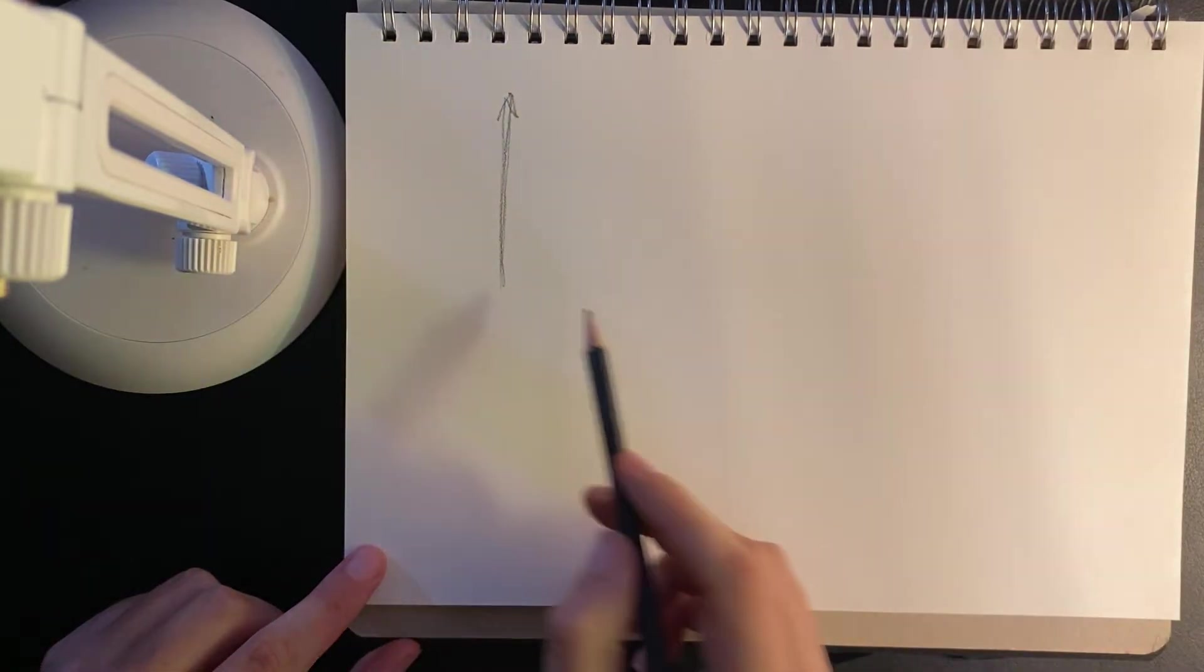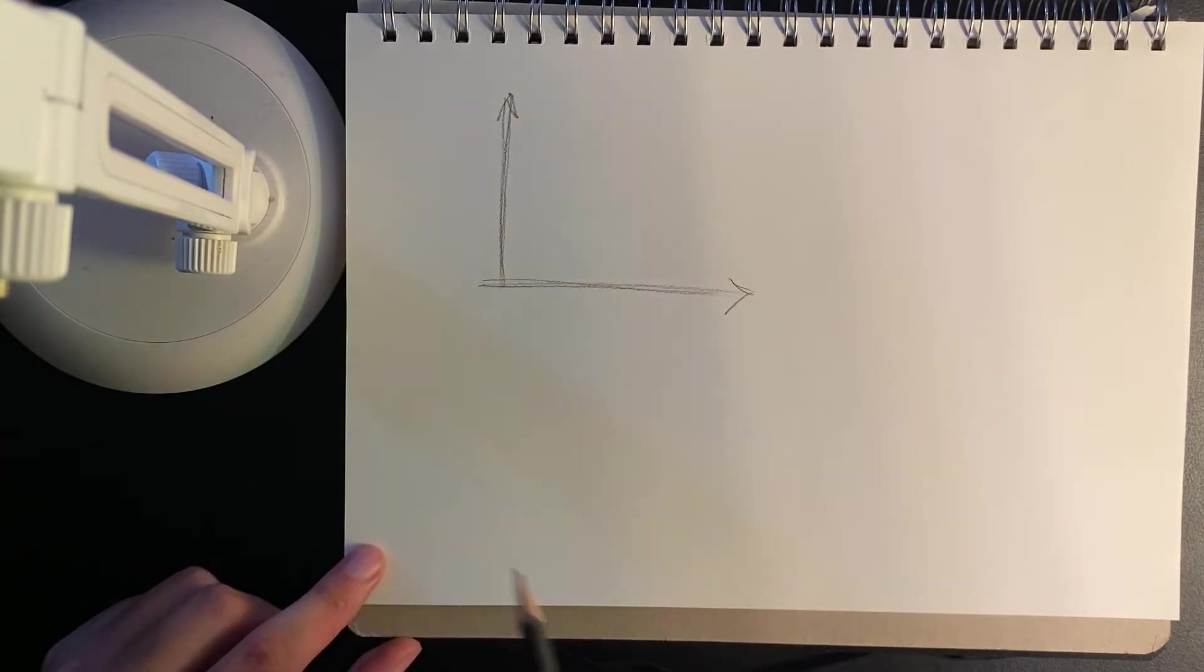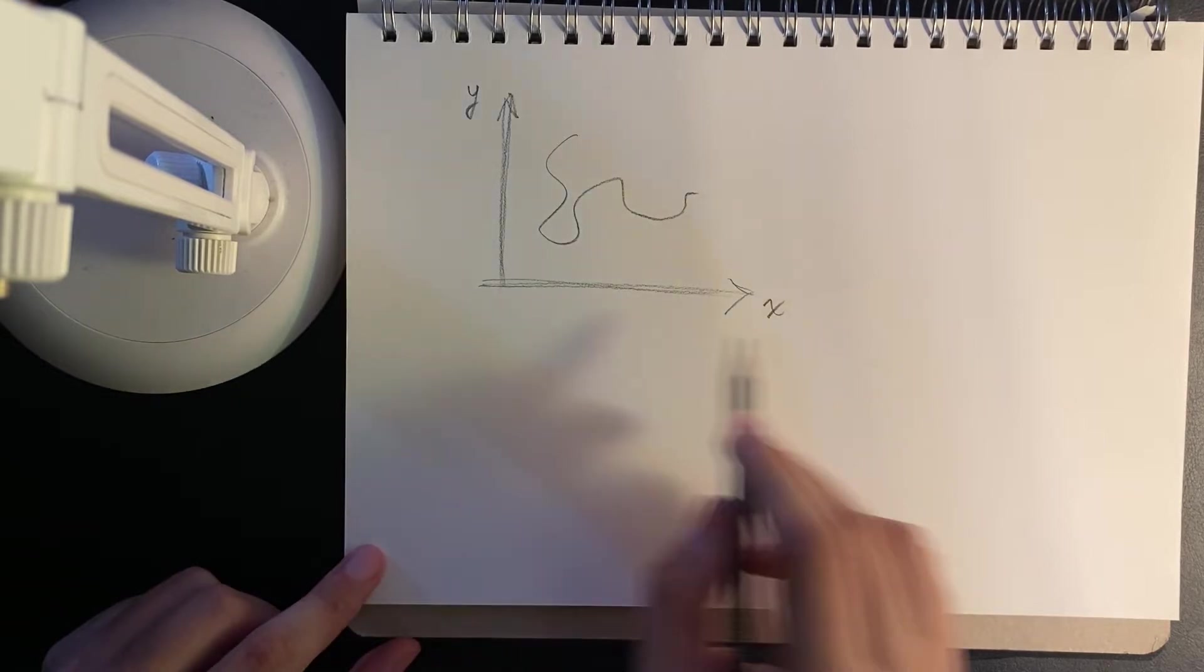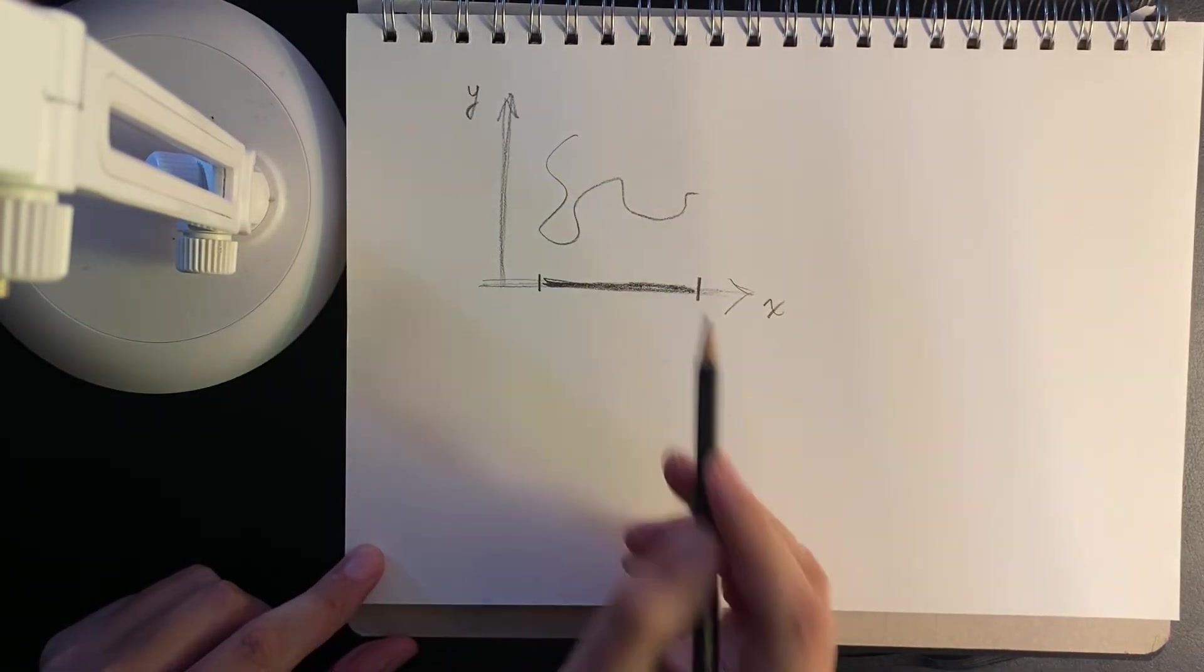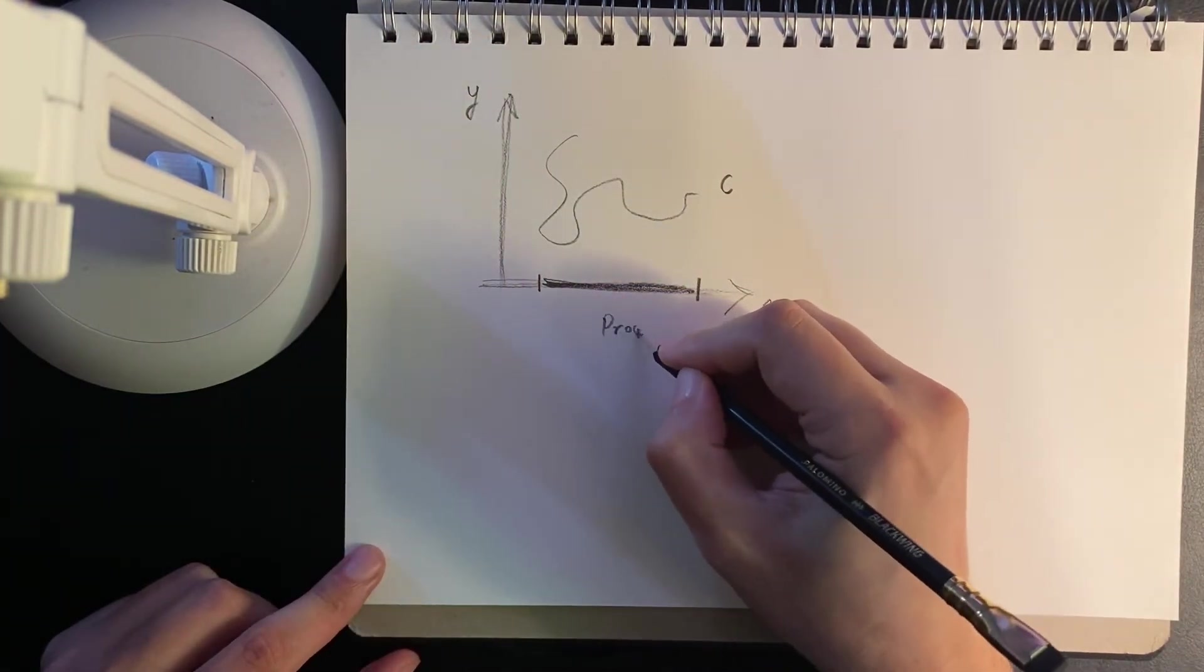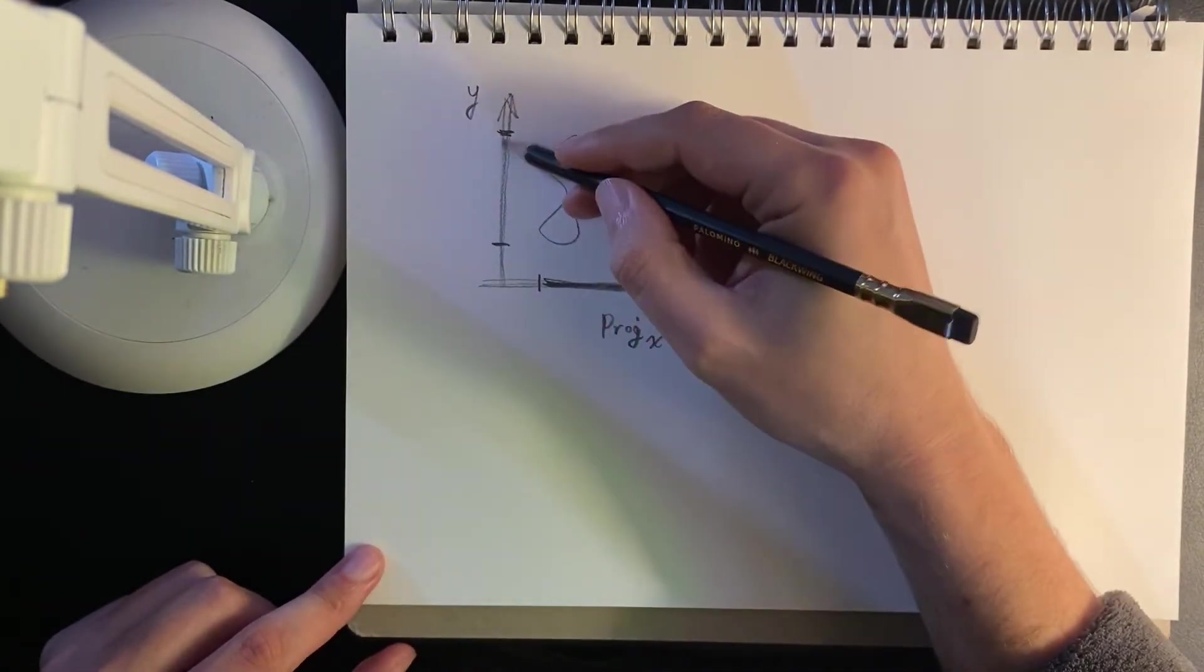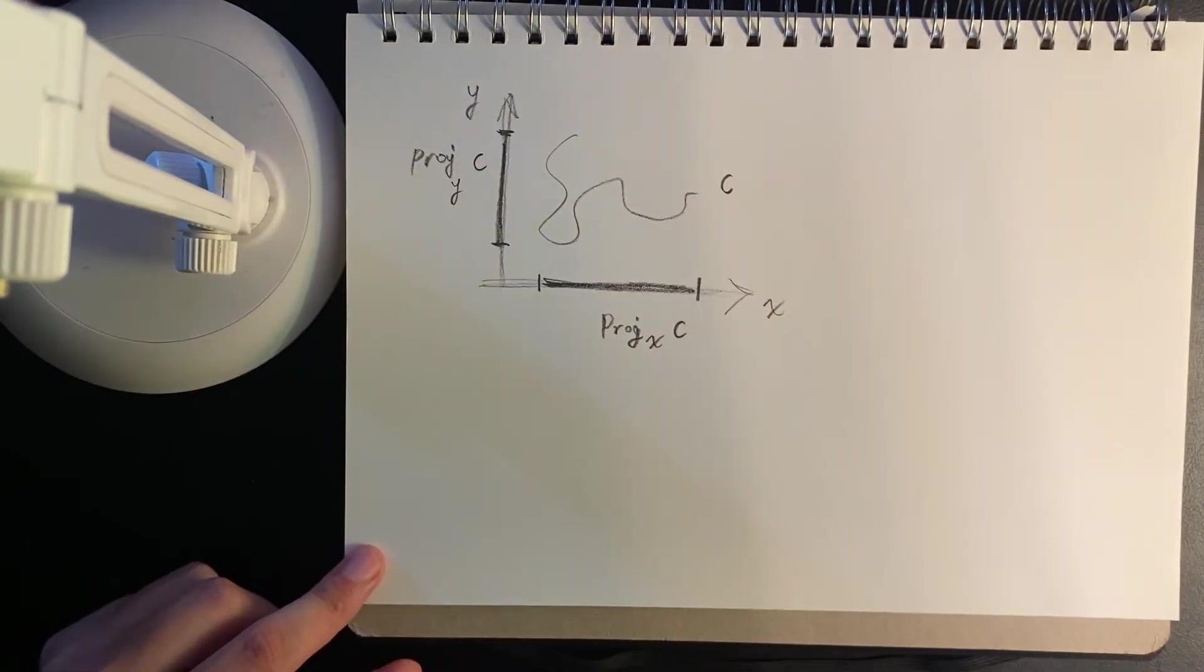A projection of a vector is a transformation which reduces the dimensionality by one, pretty much. So let's say we have x and y axis, and then we make a general sort of curve. Now, if I were to project this onto the x-axis, it would just look like this line interval. So let's go c for the curve, and we'll say this is the projection onto x of c, and if we project this onto the y-axis, it would look something like this. This is a projection onto the basis y of the curve c.